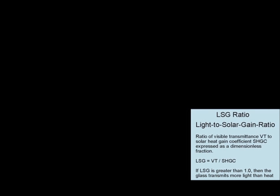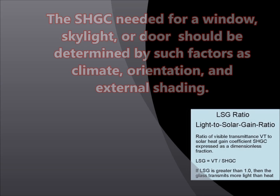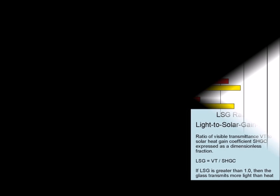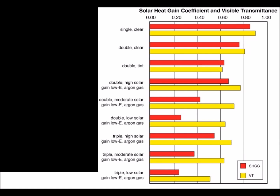A product with a low SHGC rating is more effective at reducing cooling loads during the summer by blocking heat gain from the sun. Therefore, the SHGC needed for a window, door, or skylight should be determined by such factors as climate, orientation, and external shading. Next we look at air leakage. The rate of air infiltration around a window, door, or skylight is the presence of a specific pressure difference across it, expressed in units of cubic feet per minute per square foot of frame area. A product with a low air leakage rating is tighter than one with a high air leakage rating.